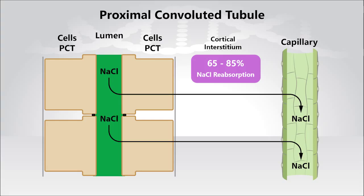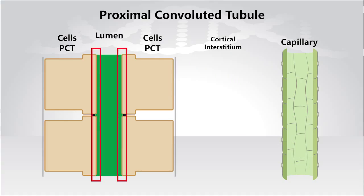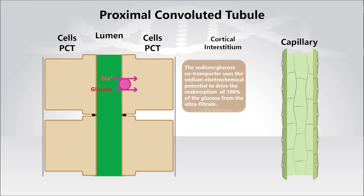It does so via the many different sodium-dependent cotransporters and exchangers, which are located primarily in the apical membrane of the cells that make up the proximal convoluted tubule. For example, the sodium-glucose cotransporter uses the sodium electrochemical potential to drive the reabsorption of 100% of the glucose from the ultrafiltrate,